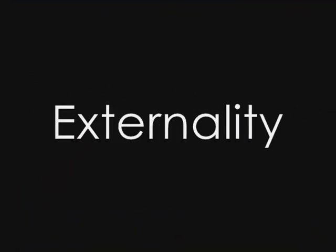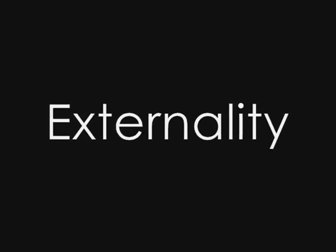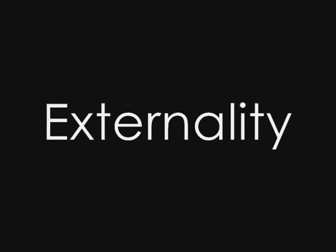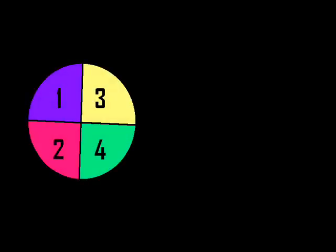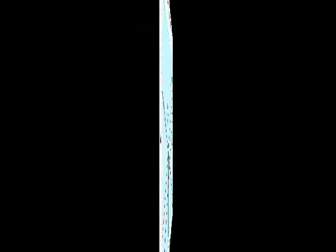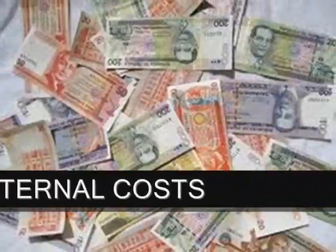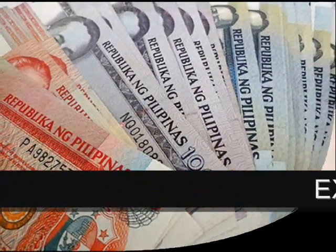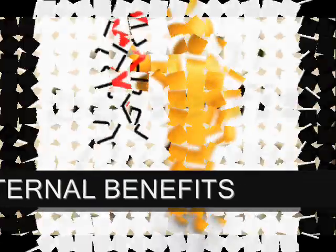Externality is a cost or benefit resulting from some activity or transaction that is imposed or bestowed upon parties outside the activity or transaction. It is sometimes called spillovers or neighborhood effects. For example, whatever firms 1 through 8 do will be affected. It may either be a positive externality or negative externality. When external costs are not considered in economic decisions, we may produce products that are not worth it. And when external benefits are not considered, we may fail to do things that are indeed worth it.